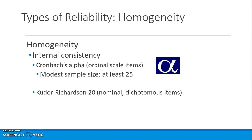Homogeneity is a type of reliability — specifically internal consistency reliability — and you typically want at least 25 participants. It is represented by the Greek letter alpha and is used for ordinal items. SPSS uses the same formula for both ordinal and nominal-level items. For dichotomous nominal items, that's the Kuder-Richardson 20, though it is effectively the same statistic. Everybody now uses SPSS or another method to estimate internal consistency reliability.